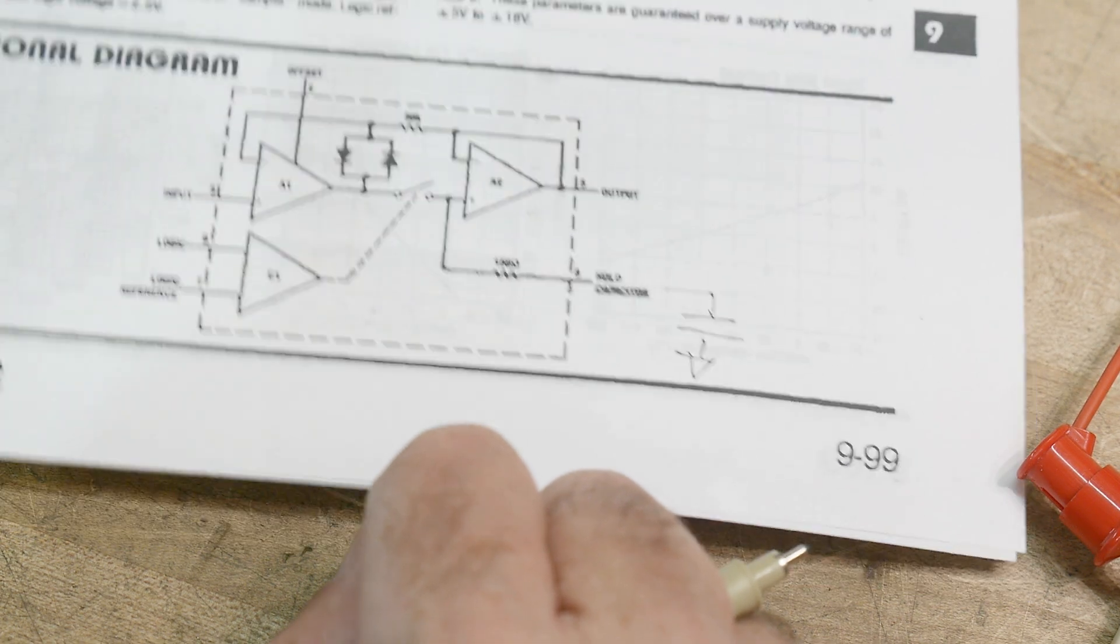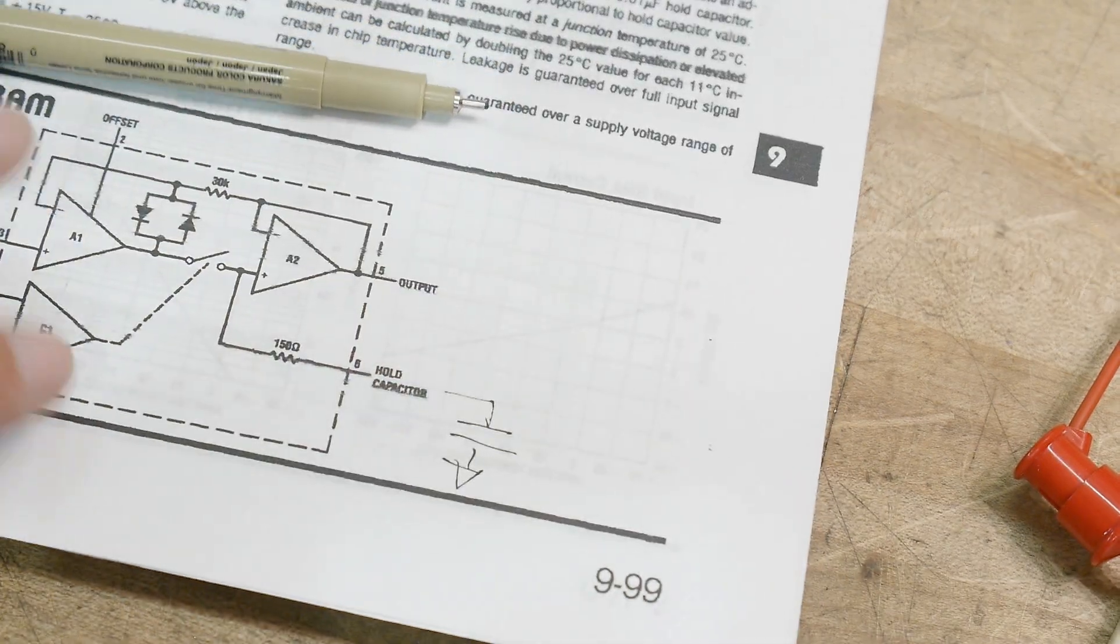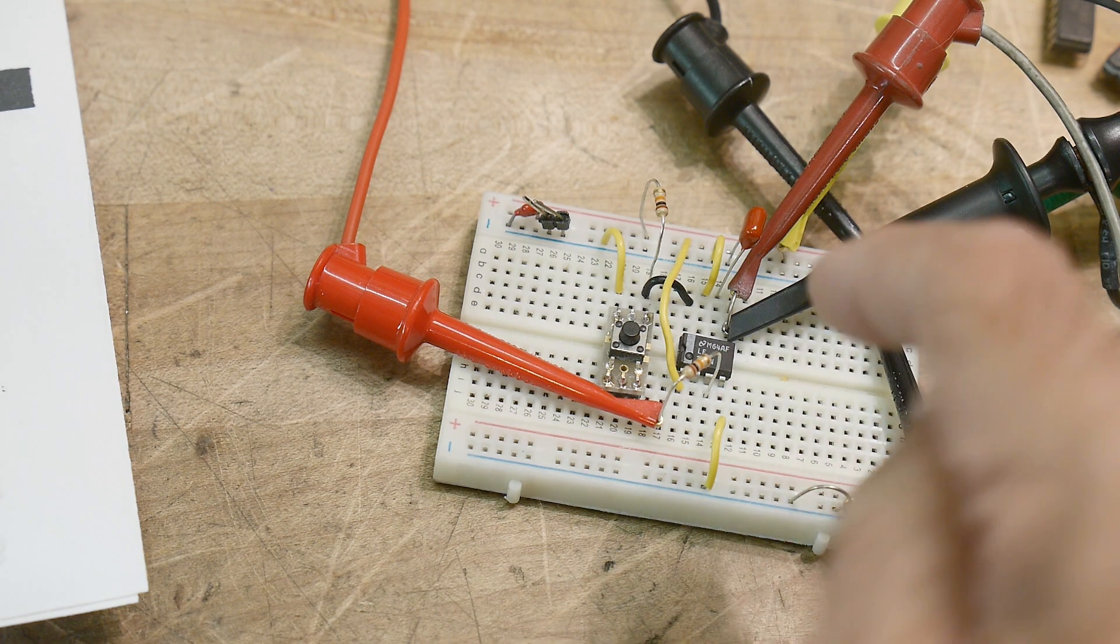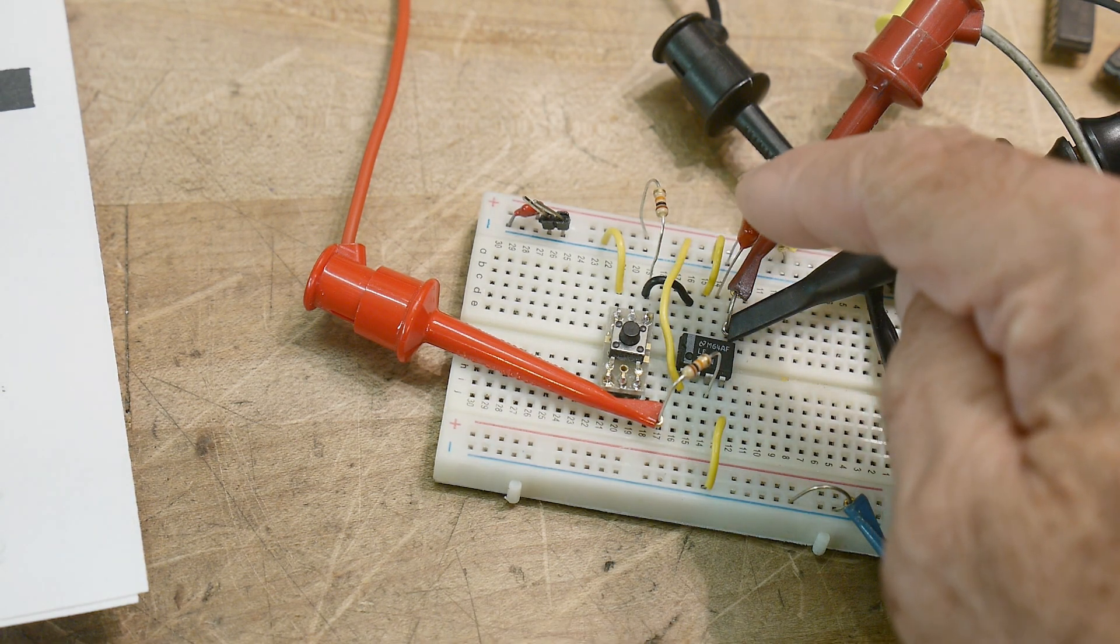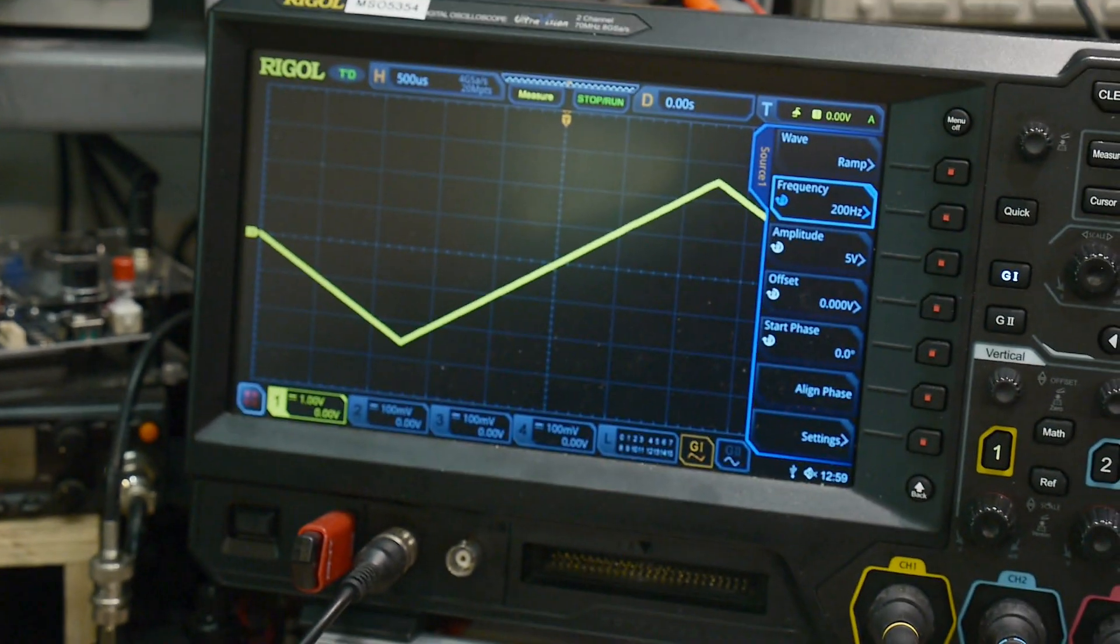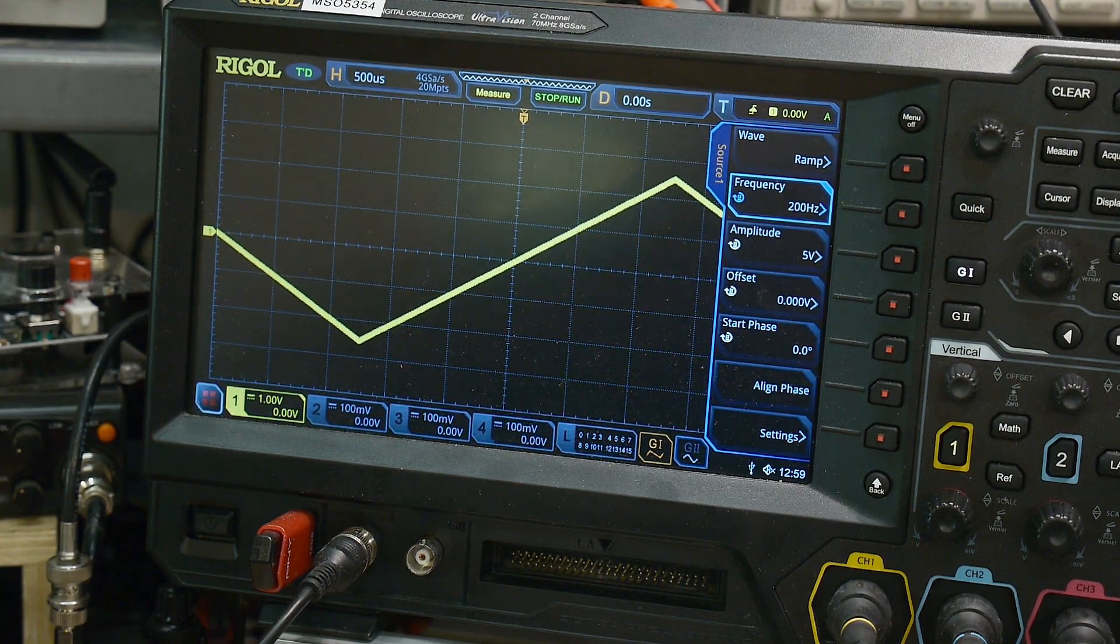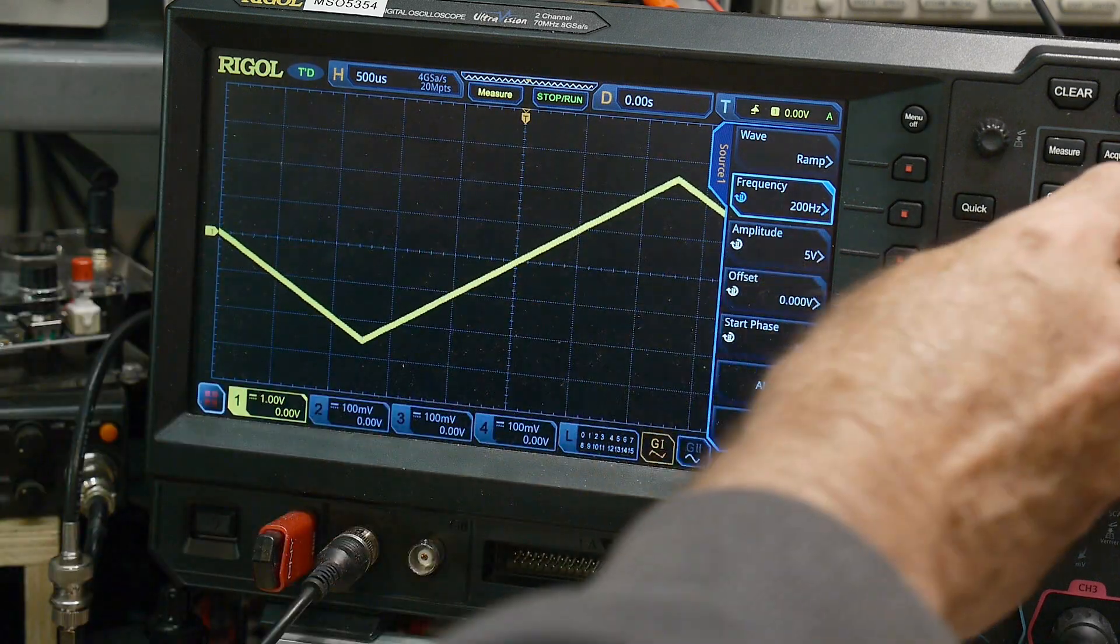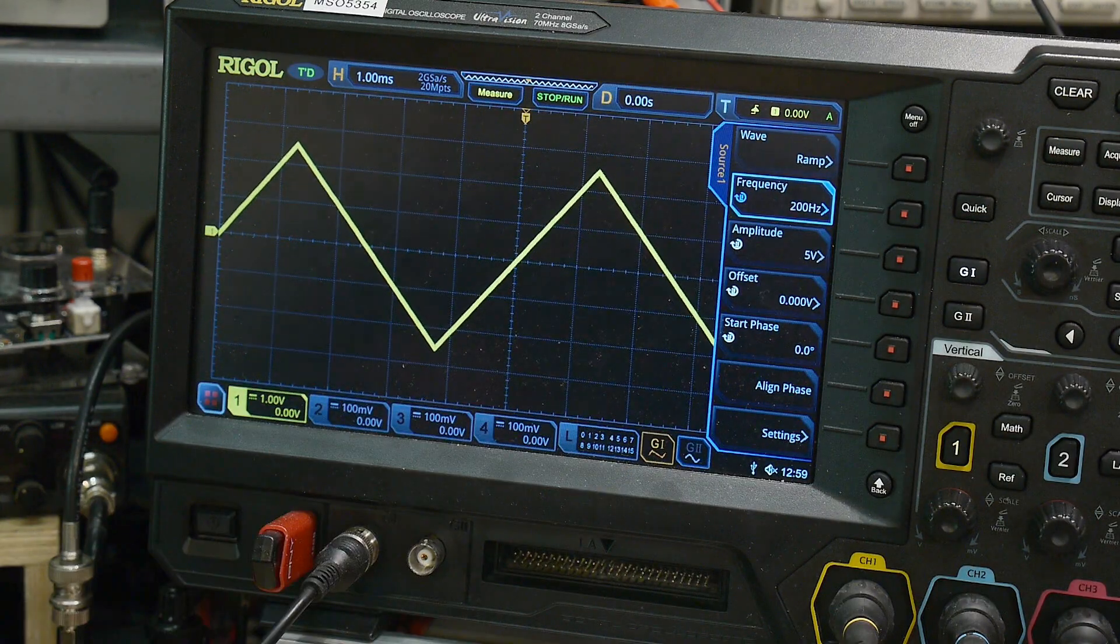And so let's see it working. I have a little circuit over here. This is my LF 398. This is my hold capacitor right here. It's a 100 nanofarad capacitor, and I've got a signal going into it. So here's the signal going into it and coming out of it. And so this is the output of the device. So I have a ramp going up and down.